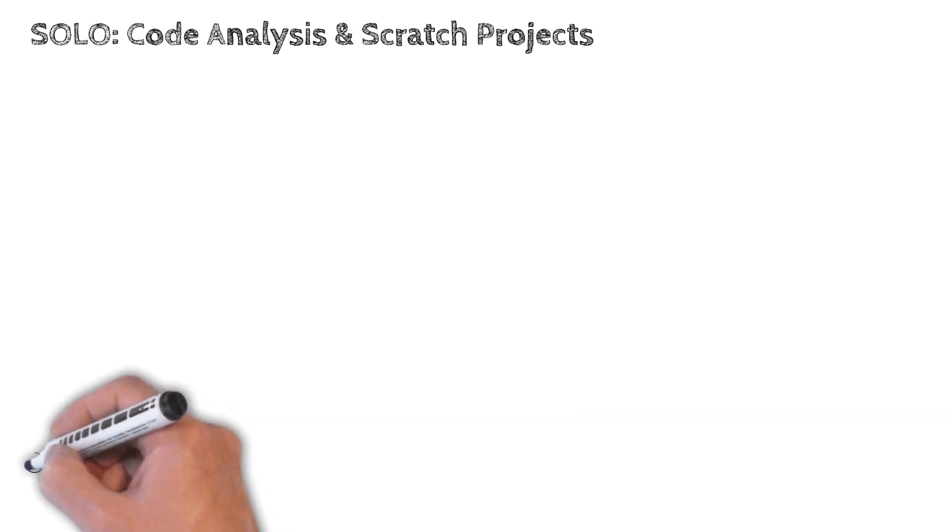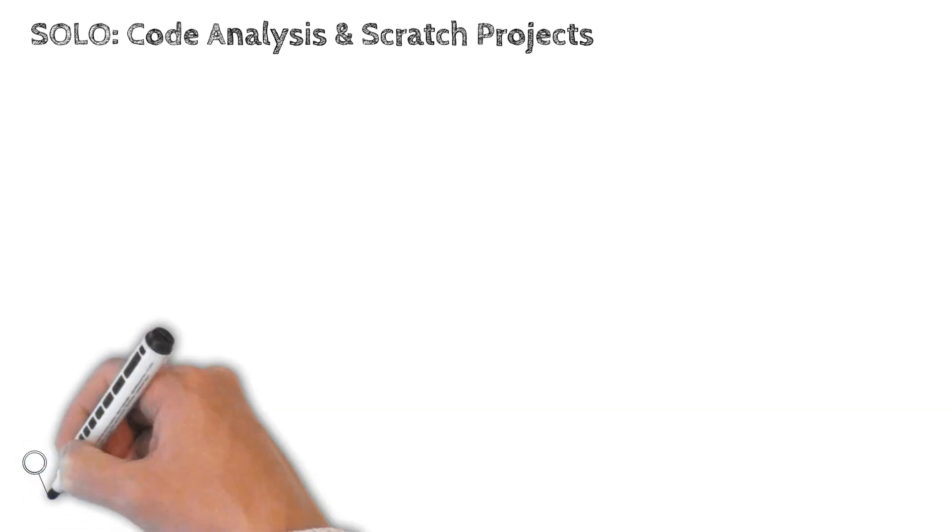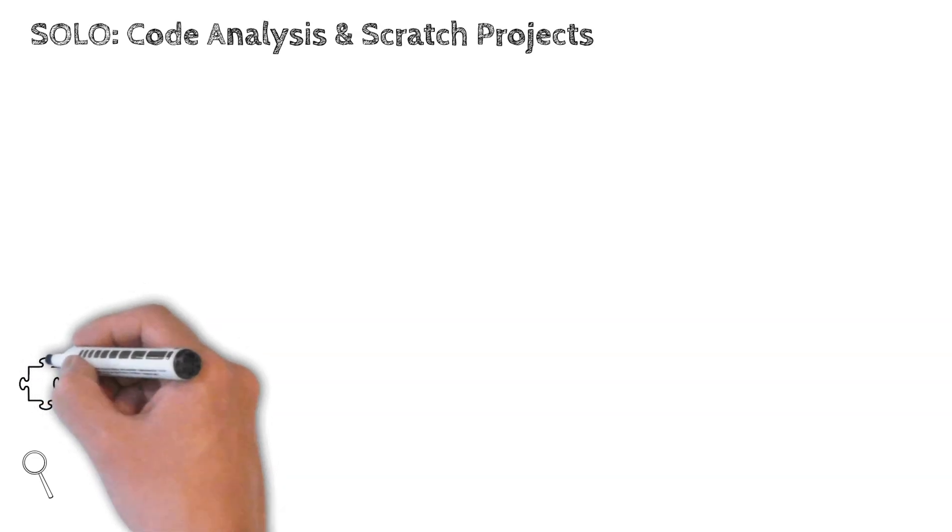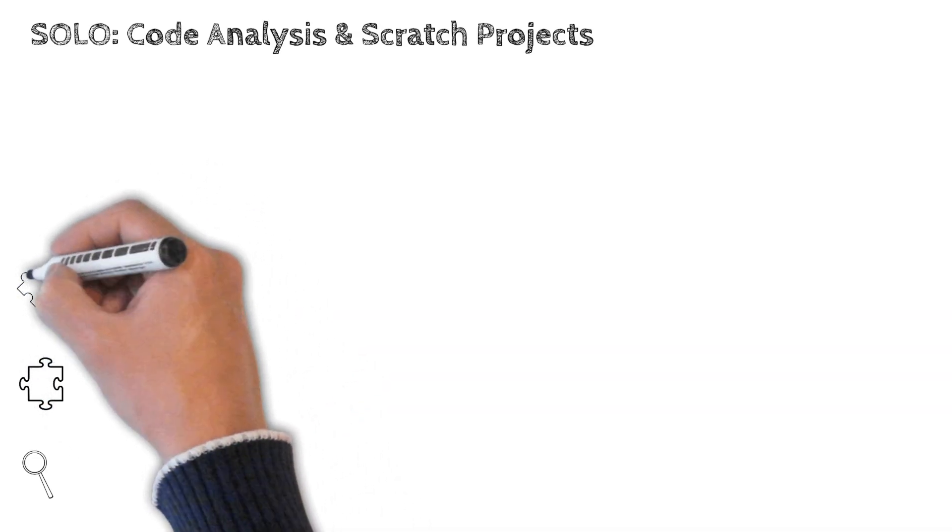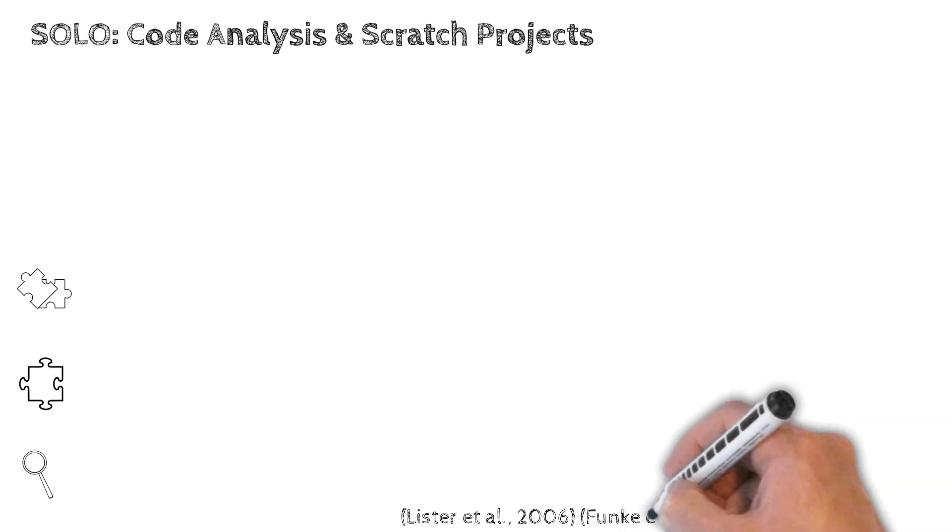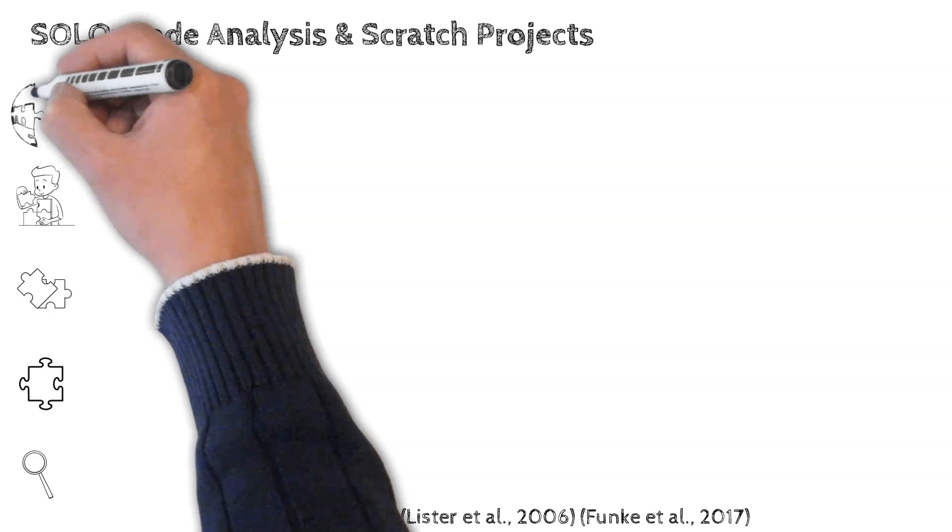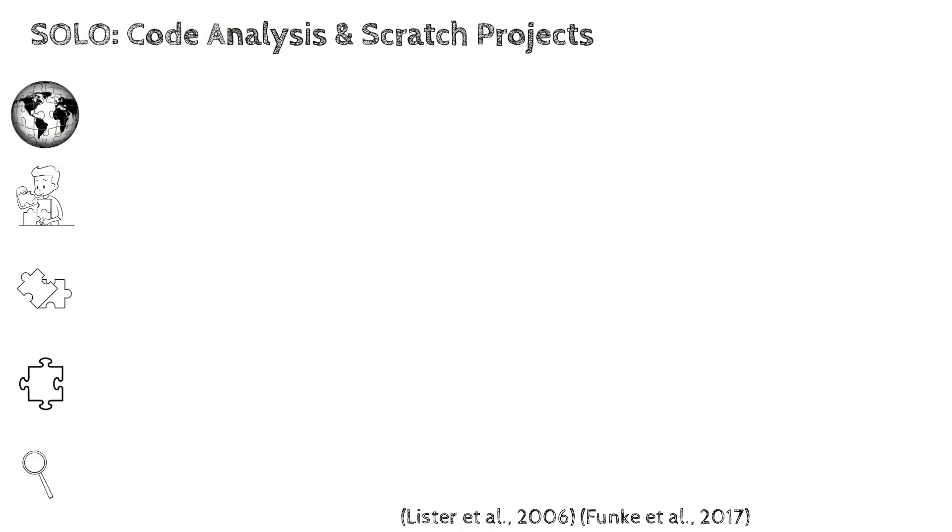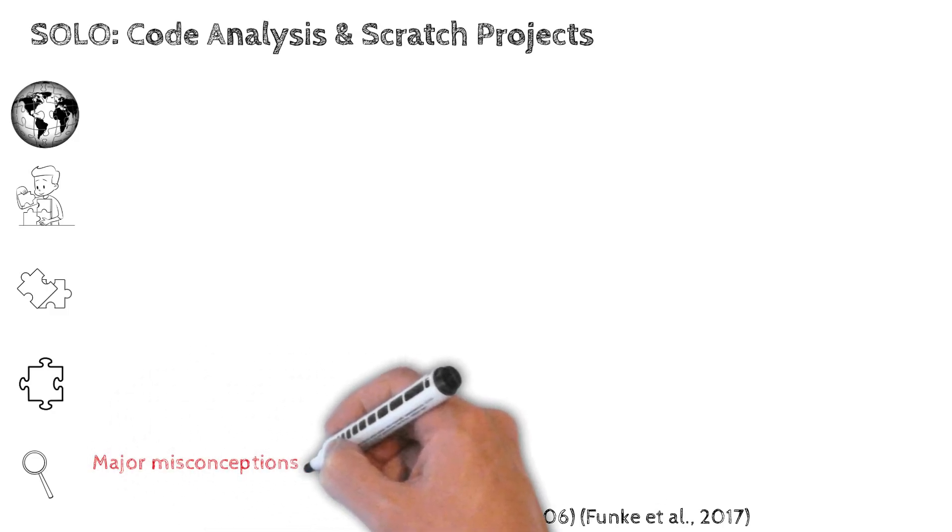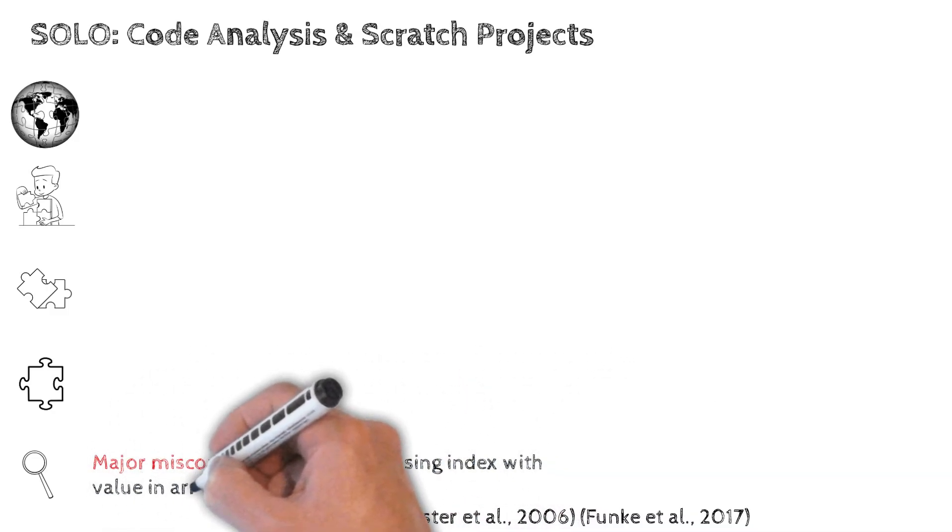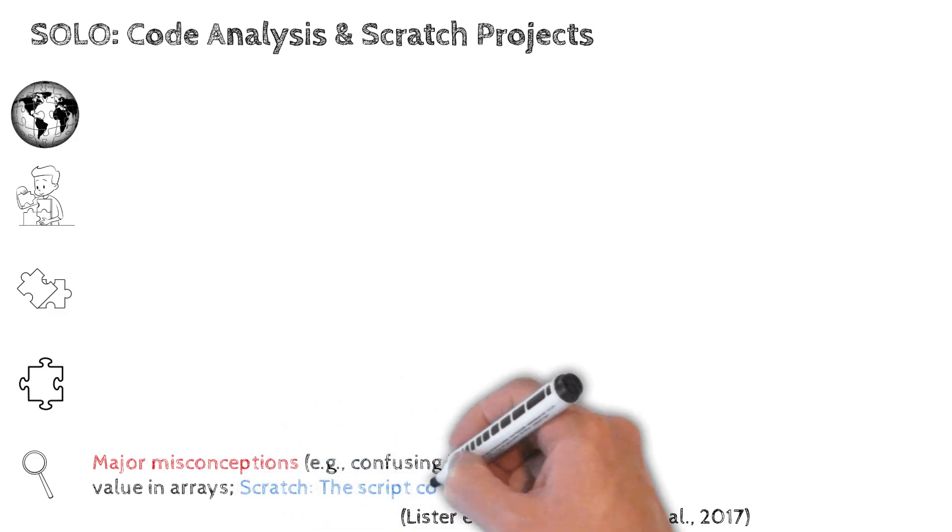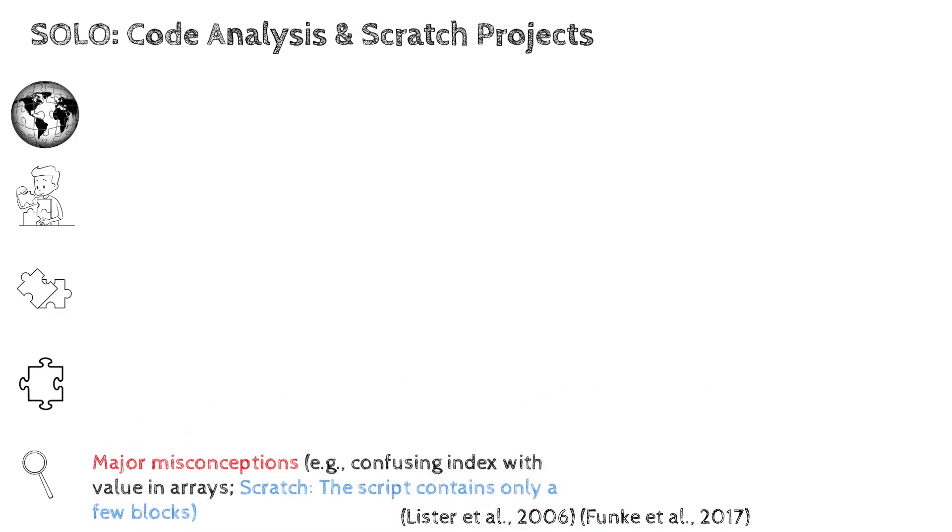How can we apply SOLO in computing education? The taxonomy can be used to assess a variety of student outputs, from code reading to Scratch projects. Studies by Lister et al. and Funke et al. show typical characteristics of each level. First, pre-structural: there are major misconceptions, for example, confusing index with value in arrays. And regarding Scratch, the Scratch script contains only a few blocks. The student does not understand how to extend the script to a meaningful program.